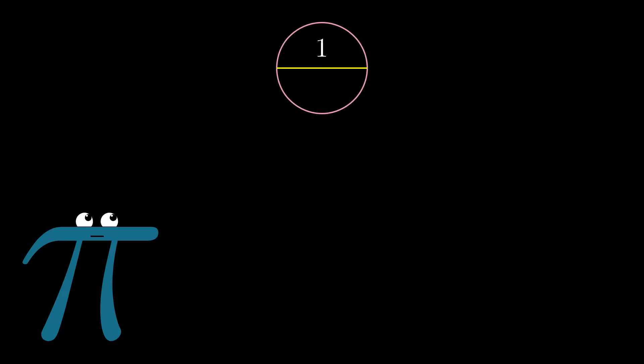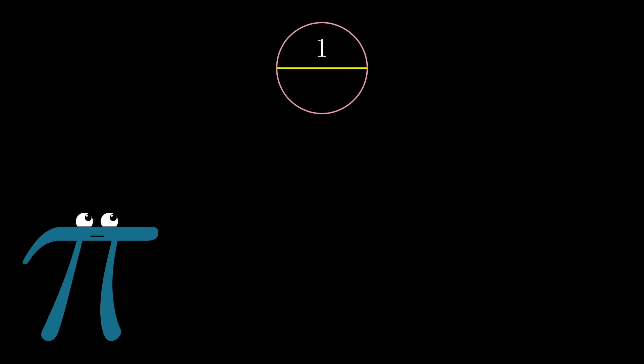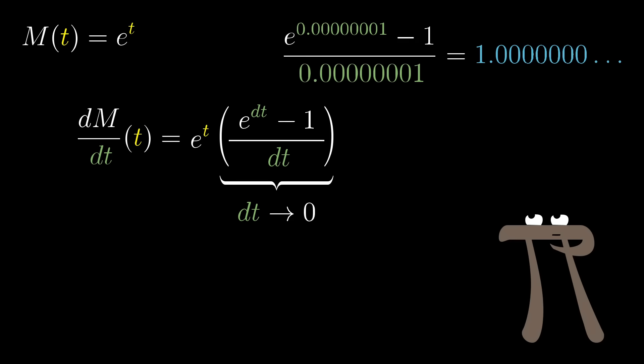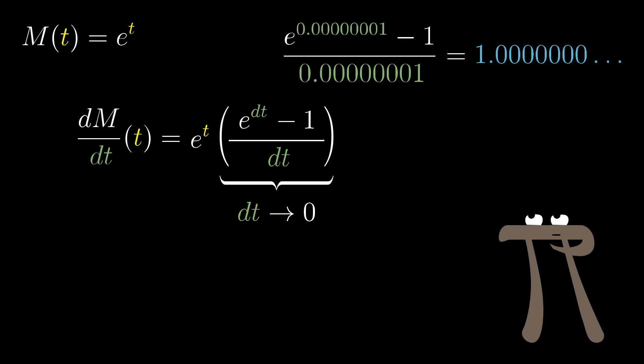If you ask why does e of all numbers have this property, it's a little like asking why does pi of all numbers happen to be the ratio of the circumference of a circle to its diameter. This is, at its heart, what defines this value. All exponential functions are proportional to their own derivative, but e alone is the special number so that that proportionality constant is 1, meaning e to the t actually equals its own derivative.